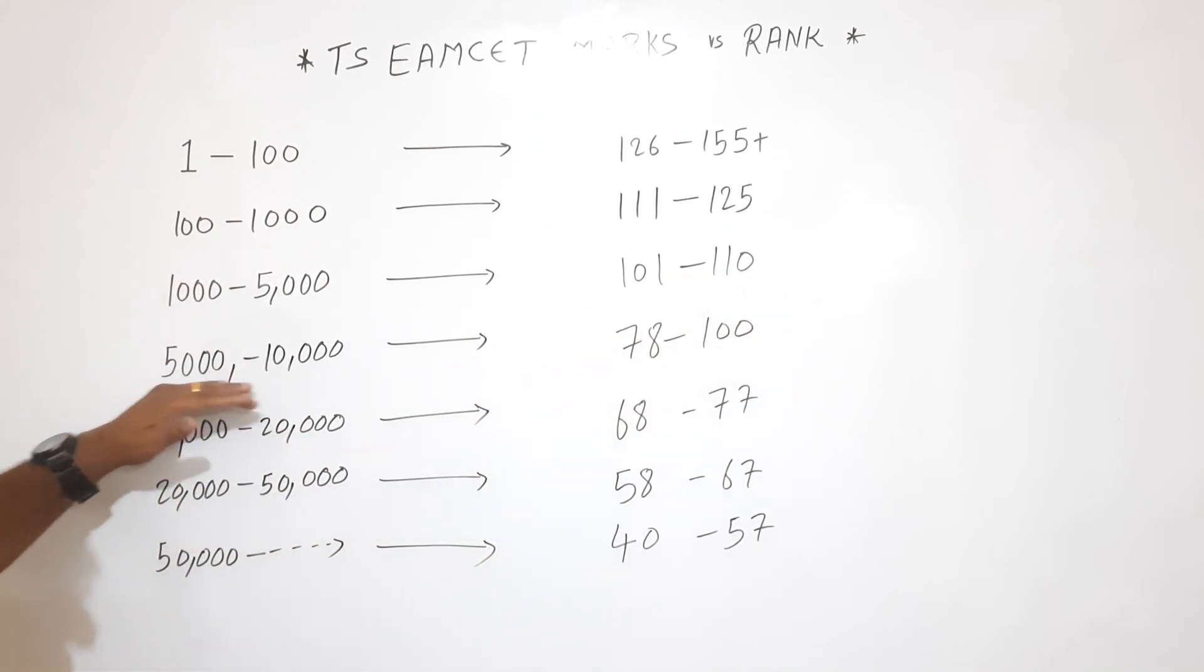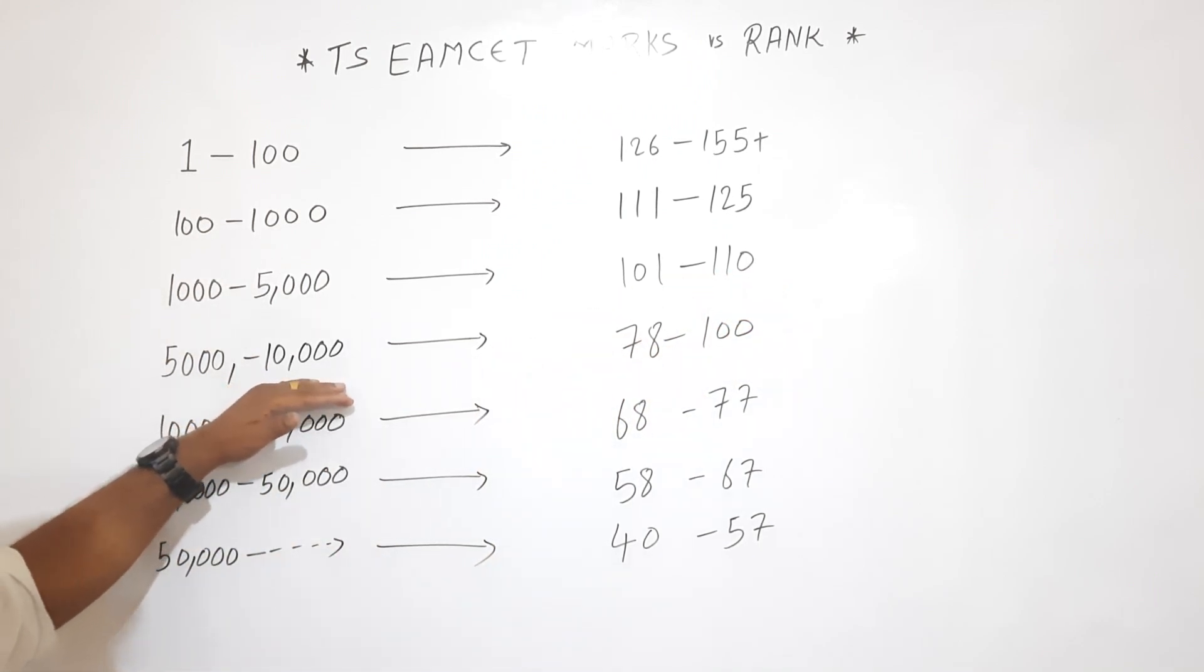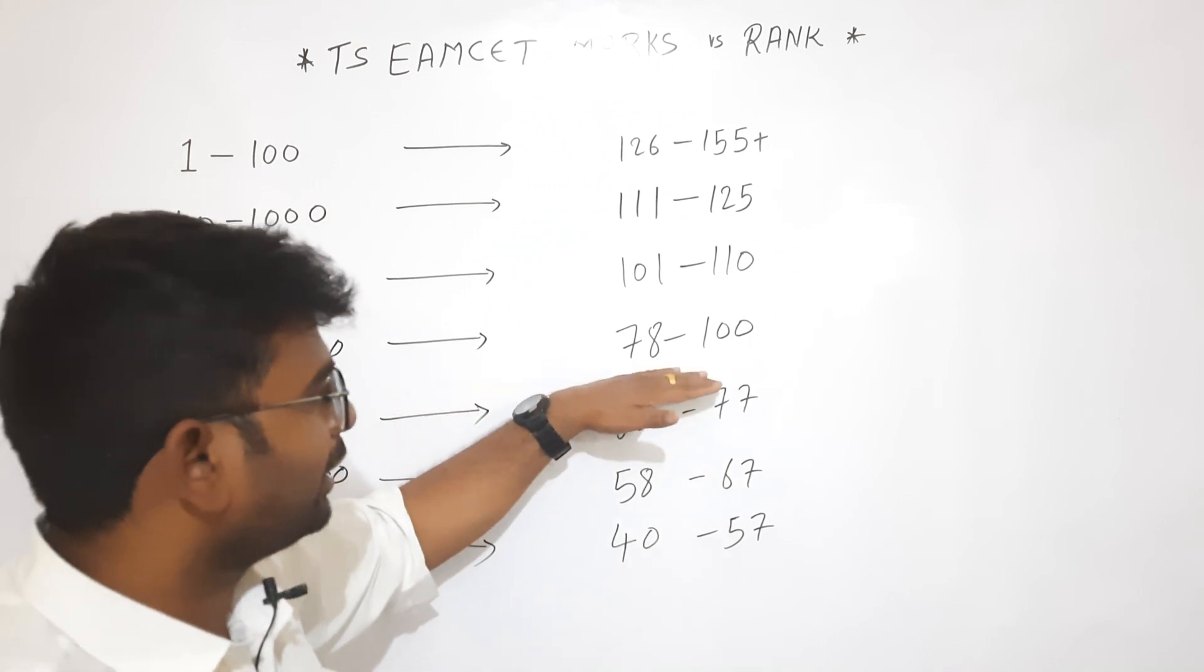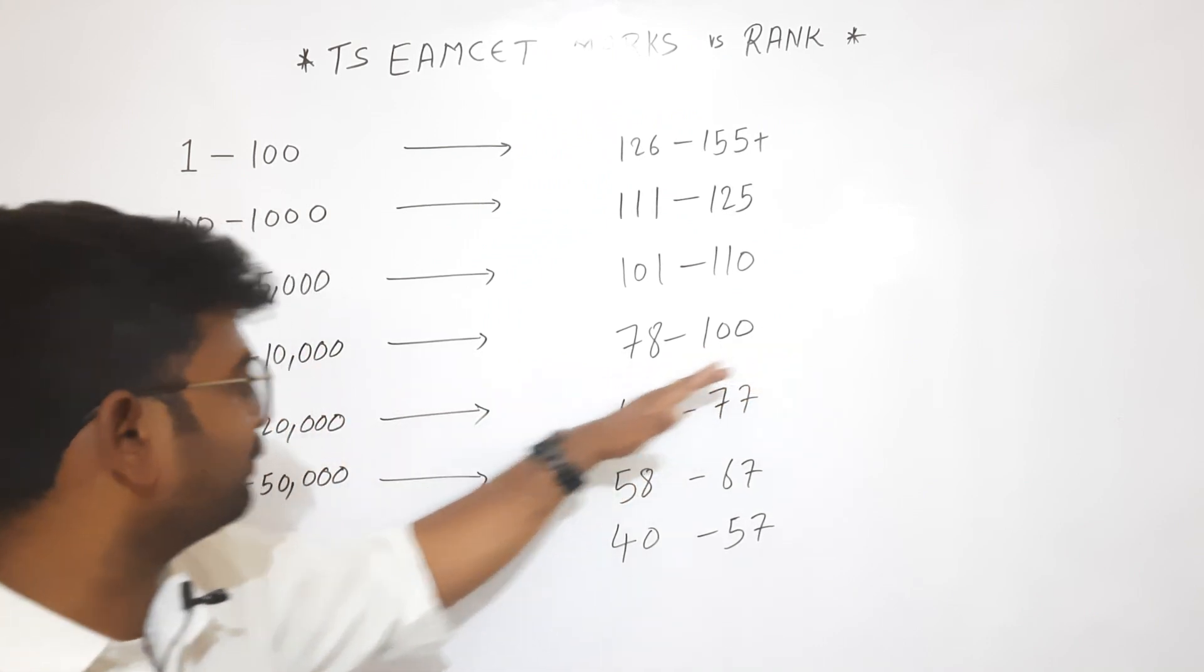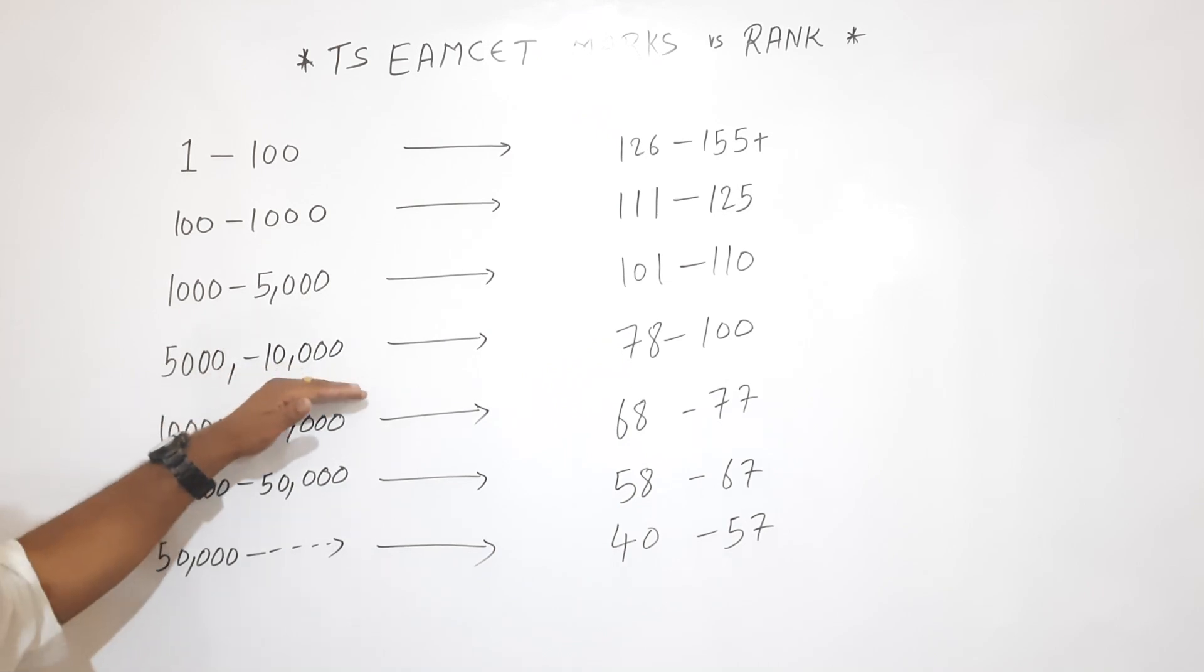And next, 5000 to 10,000 between, you rank above the strengths, you have 78 to 100 marks. If you gain the rank of the strengths, you have 5,000 to 10,000 rank.